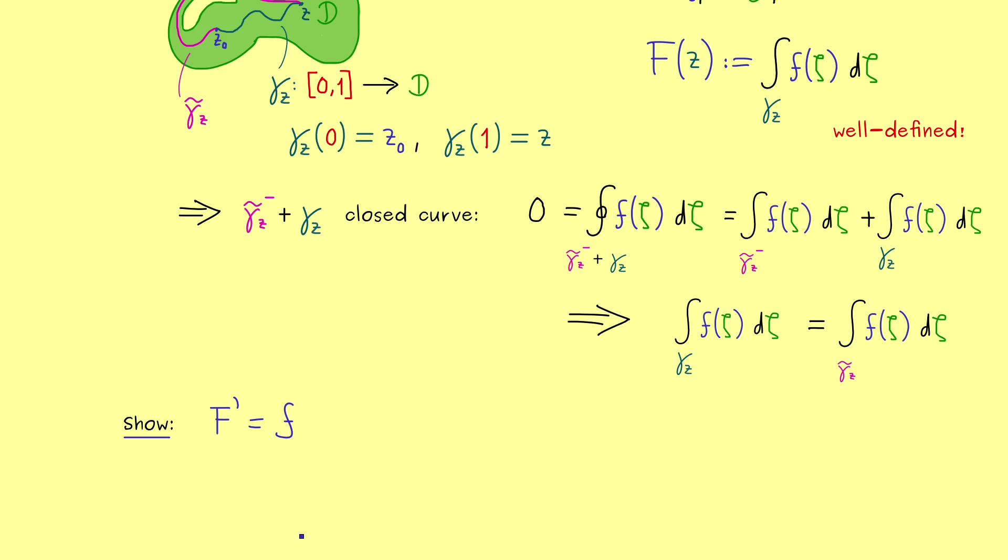Now here, please recall, the complex derivative is a pointwise property. Hence, it's sufficient to consider our point z as before. Moreover, now we know, this point z has a lot of neighbors in our open set D.